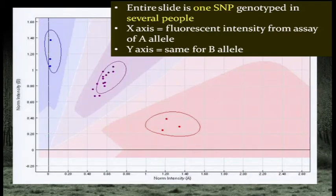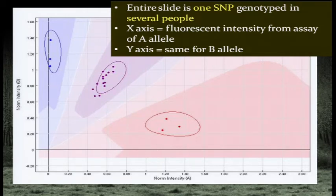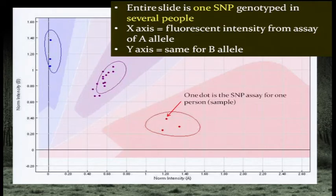SNP assays use a different fluorophore for each of the two possible nucleotides. This graph from Genome Studio shows fluorescent intensity for the B allele on the left axis and the A allele on the bottom axis; each spot represents an individual person, so the whole graph is for one SNP across multiple individuals. By quantitating fluorescence you can create a genotype: all-B homozygotes, all-A homozygotes, and heterozygotes with about half intensity of each. Those same principles can be used to define hemizygous spots, duplications of various combinations, and regions of total deletion.